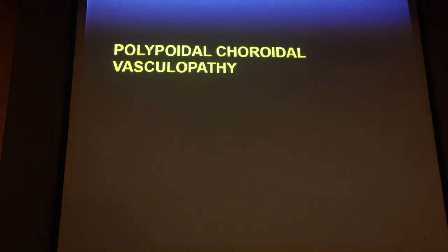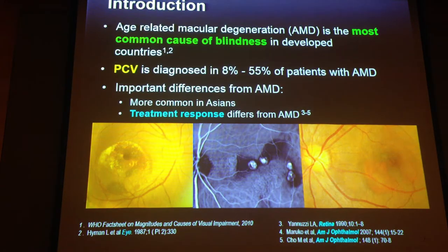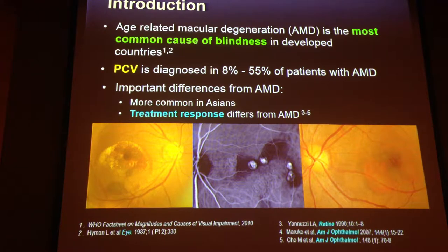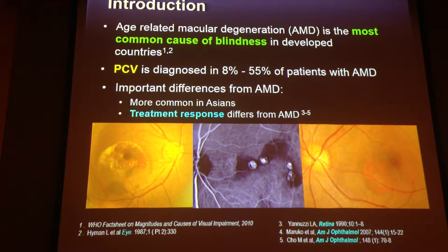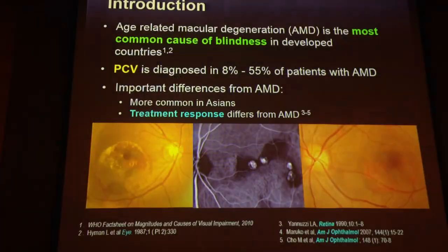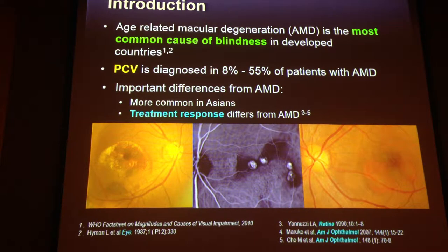Let's start with Polypoidal Choroidal Vasculopathy, or PCV. This is something that's very familiar to many of us here in Asia — we see more of this compared to perhaps in the West. We know that age-related macular degeneration is the commonest cause of blindness in developed countries, and PCV can be diagnosed in anywhere from 8% to 55% of patients with AMD. However, there are important differences from AMD — in particular, it is more common in Asians.